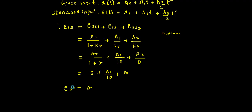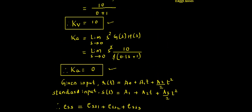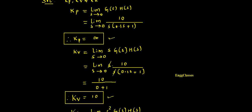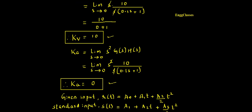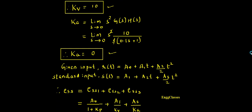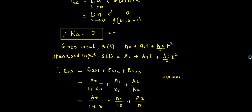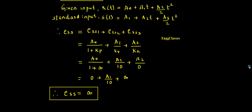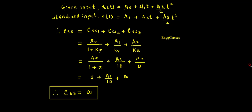So in this numerical on control systems I have considered finding the static error constants Kp (position error constant), Kv (velocity error constant), and Ka (acceleration error constant), and lastly finding steady state error due to step, ramp, and parabolic inputs. I have explained this numerical step by step. If there are any doubts, please let me know in the comment section and I am happy to answer. Thank you so much for watching.